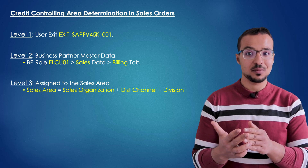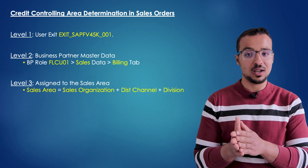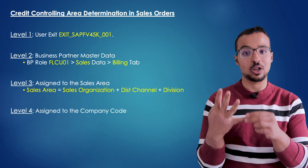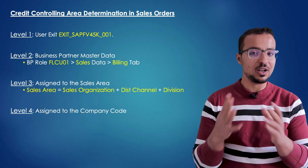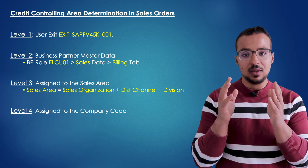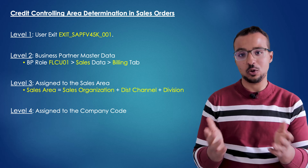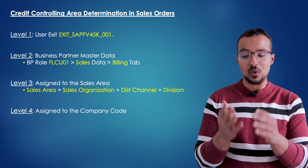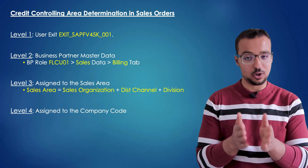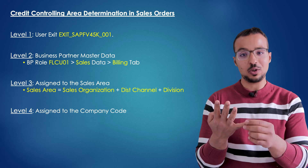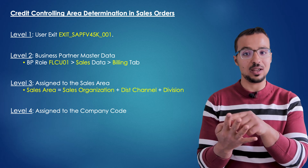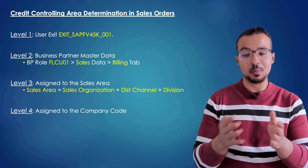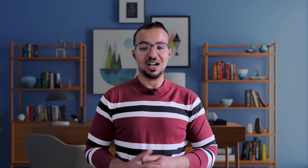If there is no credit controlling area assigned to the sales area, SAP will move to the fourth level: is there a default credit controlling area assigned to the company code? There is a very common misunderstanding that we can only assign one credit controlling area to a company code — this is completely wrong. We can define one default credit controlling area for the company code, but SAP will use it only if it cannot find the credit controlling area from the other three levels. It is completely normal to have multiple credit controlling areas inside the same company code.